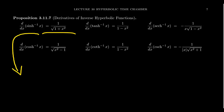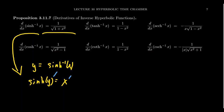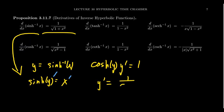If you want to compute the derivative of this, you can actually compute it implicitly because we know the derivative of sinh. Notice that if y equals sinh inverse of x, that implies that sinh of y is equal to x. We can take the derivative of both sides with respect to x. On the left-hand side, you're going to get cosh of y times y prime. On the right-hand side, you take the derivative of x, you're going to get 1. So solving for y prime, you get y prime equals 1 over cosh of y.